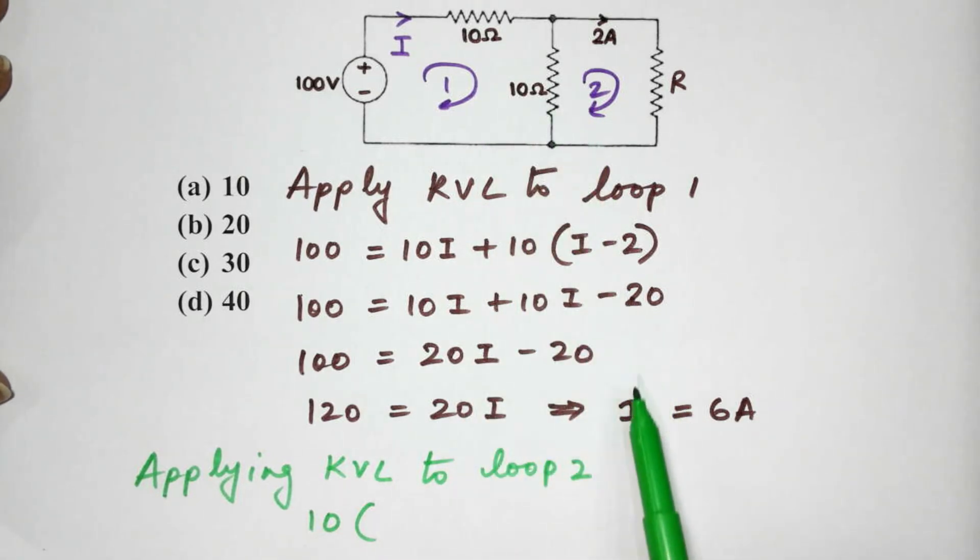So, 2 minus I would be 2 minus 6 which is minus 4, plus R times 2 is equal to 0. Now, solving for R,